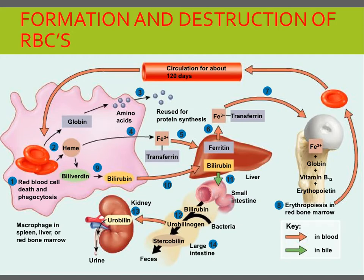The iron 3+ transferrin complex is carried to red bone marrow, where red blood cell precursor cells take it up through receptor-mediated endocytosis for use in hemoglobin synthesis. Iron is needed for the heme portion and amino acids are needed for the globin portion. Vitamin B12 is also needed for the synthesis of hemoglobin. Erythropoiesis in red bone marrow results in the production of red blood cells, which then enter circulation. When iron is removed from heme, the non-iron portion is converted into biliverdin, a green pigment, and then into bilirubin, a yellow-orange pigment. Bilirubin enters the blood and is transported to the liver.